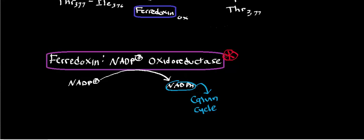NADPH is not actually involved in the gluconeogenic process itself, but in order to synthesize the 3-phosphoglycerate, we're basically going to need the NADPH.